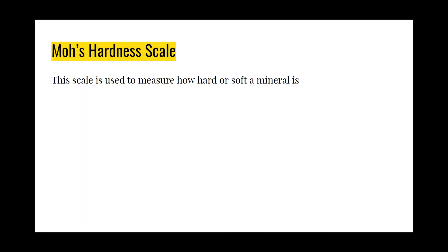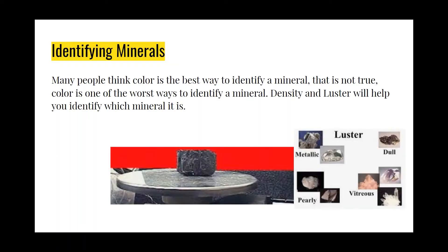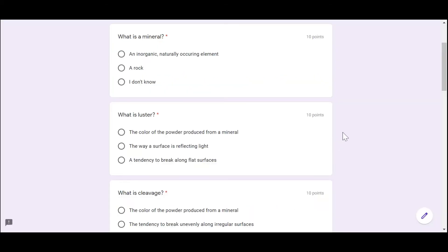Mohs hardness scale is a scale used to measure how hard or soft a mineral is, and this is how you can identify minerals. Many people think color is the best way to identify a mineral, but that isn't quite right — color is actually one of the worst ways. Density and luster will help you identify which mineral it is.